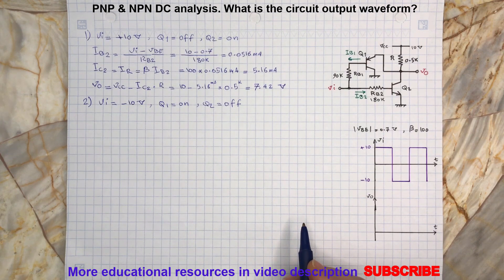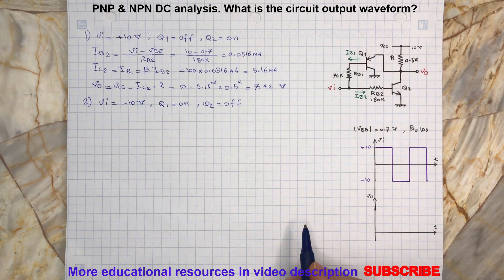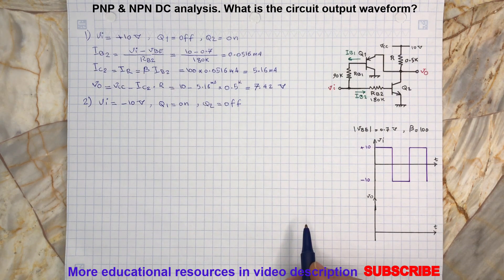Now, by a simple KVL from the supply voltage through resistor R and the emitter-base junction, we can determine the base current or emitter current, depending on how you write the KVL expression. So we will have...